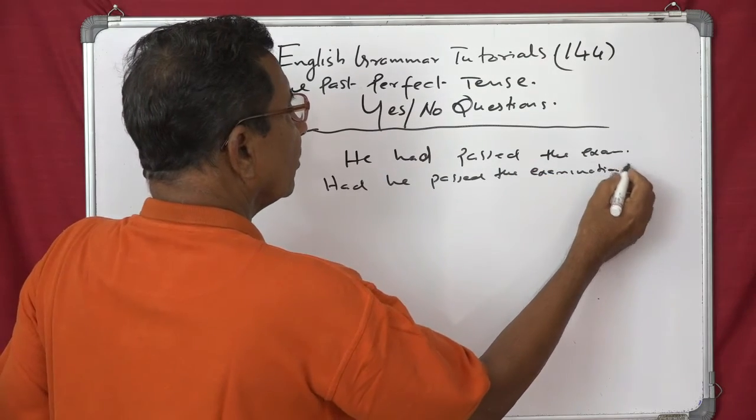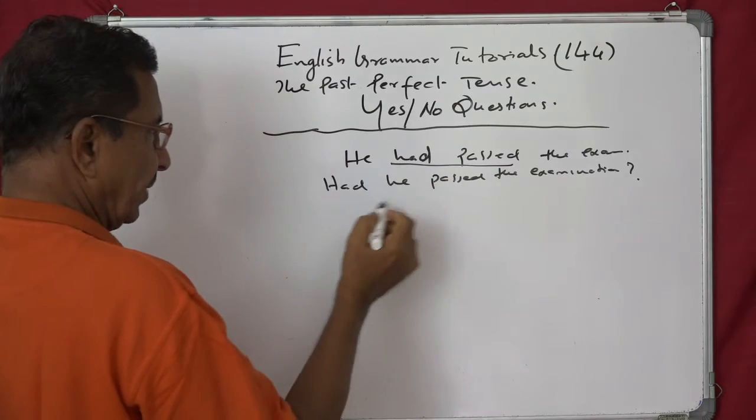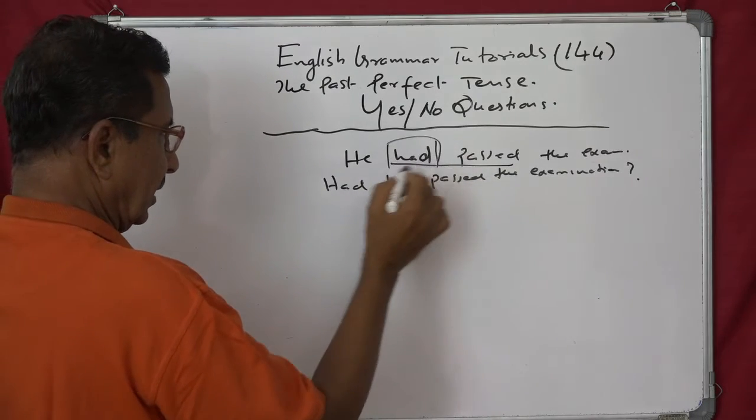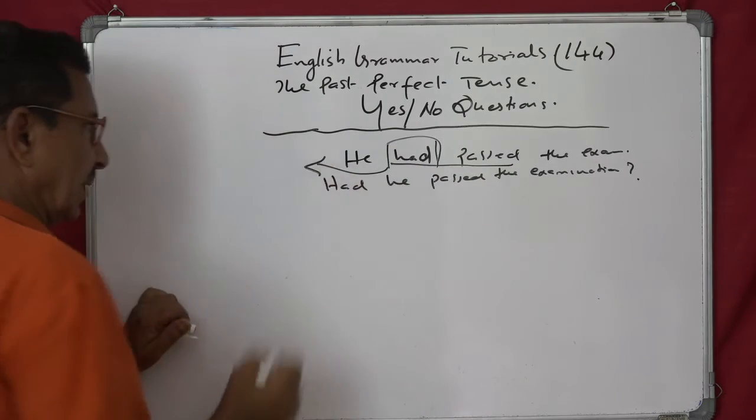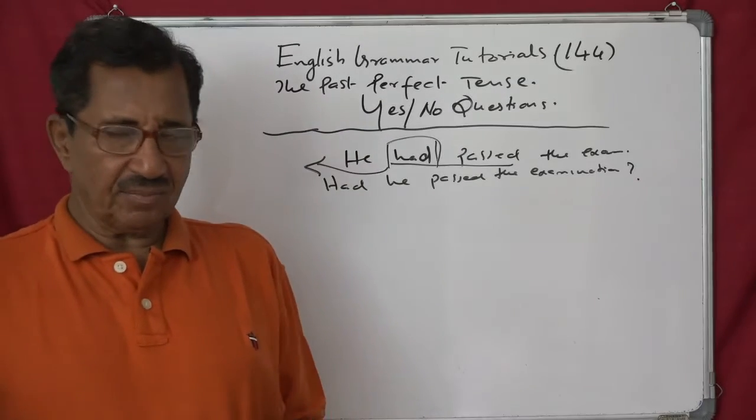So here what happened is that you change the position. When you have two parts, take the first part and then put it in front of the subject of the sentence. Had he passed the examination. Very simple.